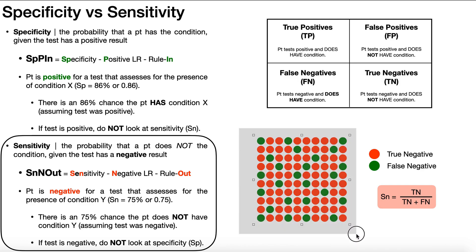With sensitivity, instead of looking at positives, we look at negatives. A true negative means the test came out negative and the patient doesn't have the condition — that's a good outcome you want to maximize. A false negative is when the test comes out negative but the patient actually has the condition — you want to minimize those. Sensitivity is calculated as true negatives divided by true negatives plus false negatives, giving a percentage. In our example, that sensitivity value was 75%.